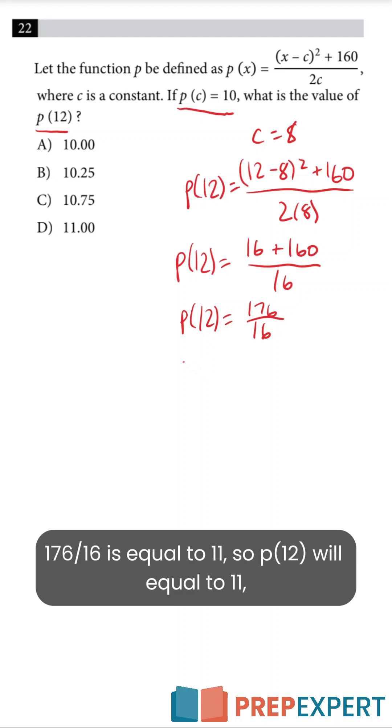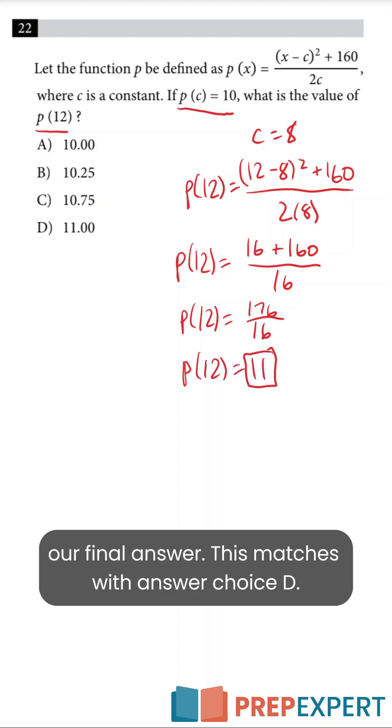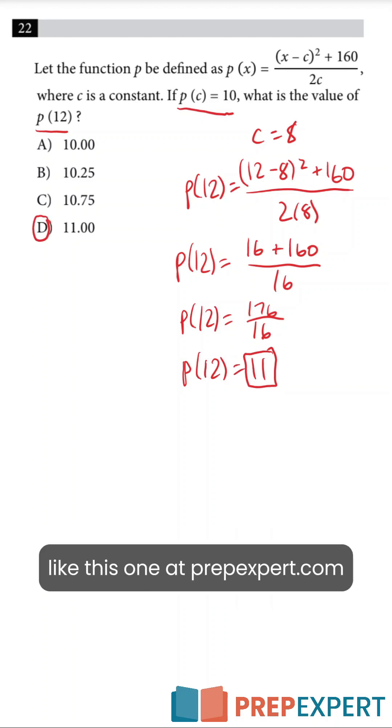176 divided by 16 is equal to 11, so p of 12 will equal 11, our final answer. This matches with answer choice D. You can learn more digital SAT strategies like this one at prepexpert.com.